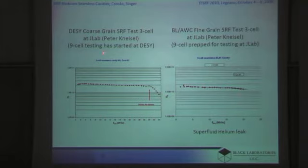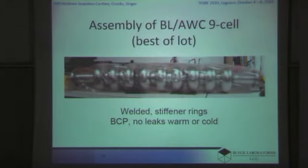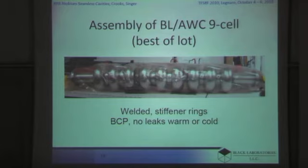On the other hand, the three-cell from DAISY that was tested shortly before that showed good results up to close to 30 megavolts per meter. The best of the three three-cells were assembled into a nine-cell, it's been welded, and the stiffener rings have been applied at Jefferson Lab. The leak testing has been successful at warm and cold, and that waits to be tested.